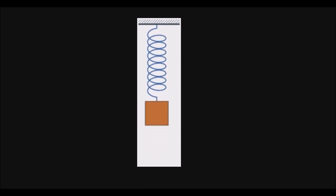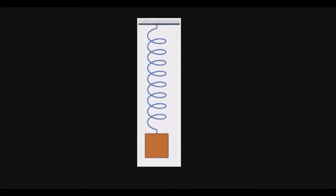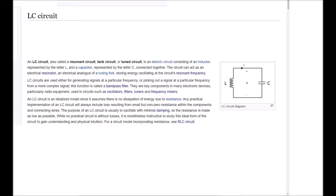So, that breaks down all of the different glossary definitions included in the LC circuit paragraph that first appears on Wikipedia. So, now that I've defined them all, I'm going to re-read the very first paragraph of an LC circuit or a tank circuit. Here I go again.